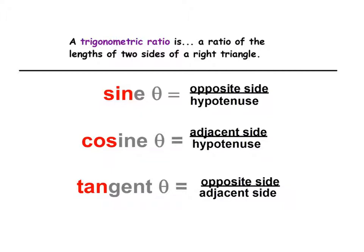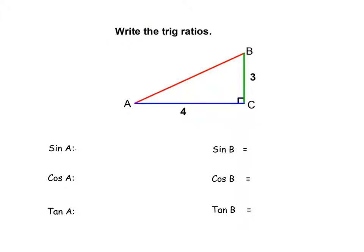So we're going to get some practice with writing these ratios. All right, here is a right triangle. Triangle A, B, C. Two of the sides are labeled 3, 4. And you know what? I'm going to go ahead and fill in the hypotenuse. With the Pythagorean theorem, you could easily figure out the hypotenuse. Or maybe you remember that a 3, 4, 5 triangle is a right triangle.